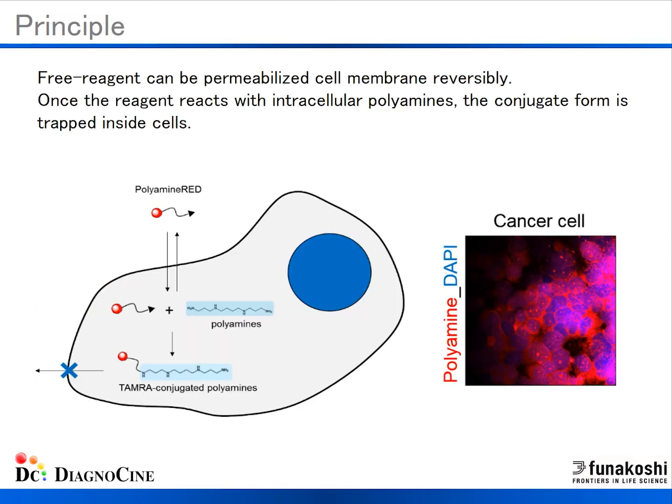Here is the principle on how the stain works. Polyamine red penetrates the cell membrane and reacts to intracellular polyamines specifically. Once the reagent reacts with intracellular polyamines, a conjugate is formed and the conjugate is trapped inside of cells, so only intracellular polyamines can be detected.